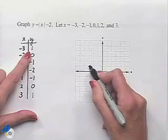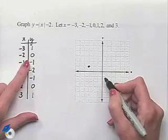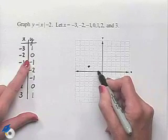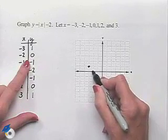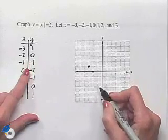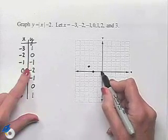Negative 2 comma 0, two units to the left on the x-axis and we don't move up or down from there. Negative 1 comma negative 1, move one to the left and one down.